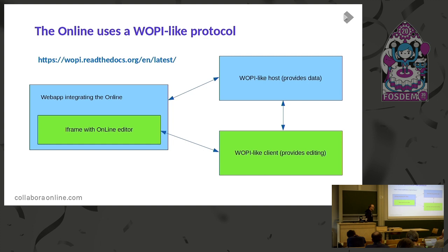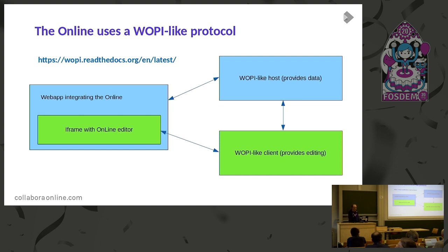We need to talk a few words about the WOPI protocol, or WOPI-like protocol. WOPI is an abbreviation of Web Application Open Platform Interface. This protocol is used to exchange documents and data between web applications, making it suitable for this case. It's an open standard — you can read the documentation. Collabora Online implemented parts of that standard and also extended it in some ways, so we call it WOPI-like because it's not strictly WOPI, but very similar.